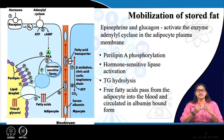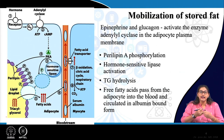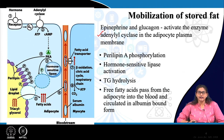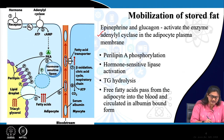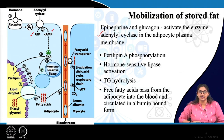This mobilization basically occurs as the signal comes from epinephrine and glucagon hormones. What do epinephrine and glucagon do? They actually activate the enzyme adenylyl cyclase. Adenylyl cyclase then converts ATP to cyclic AMP via G protein-coupled receptor.